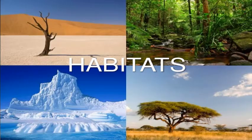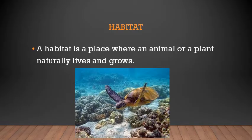Now we are going to learn what habitats are. A habitat is a place where an animal or a plant naturally lives and grows. Naturally — meaning the animal is naturally present there, not brought and kept in a zoo. A zoo is not a habitat; it is an artificial home created for animals.